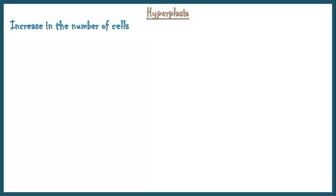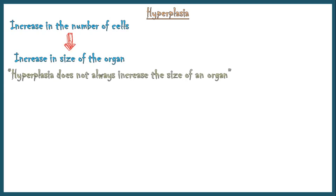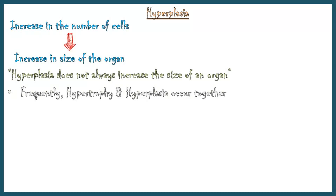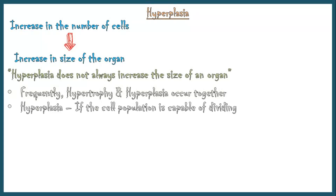Hyperplasia is an increase in the number of cells in an organ or tissue, usually resulting in an increase in the size of the organ or tissue. However, hyperplasia does not always increase the size of an organ, especially in compensatory hyperplasia. Frequently, both hypertrophy and hyperplasia occur together. A tissue undergoes hyperplasia only if the cell population is capable of dividing. Hyperplasia could be either physiological or pathological.